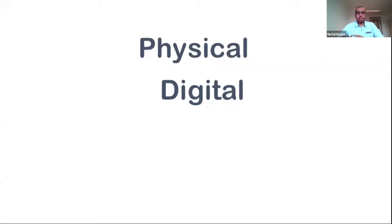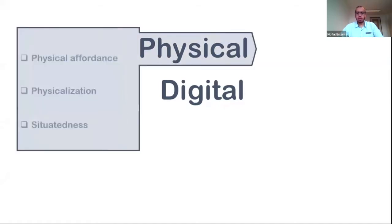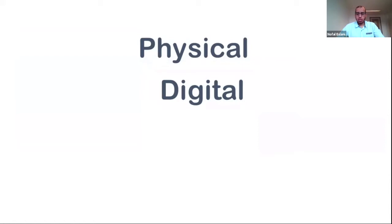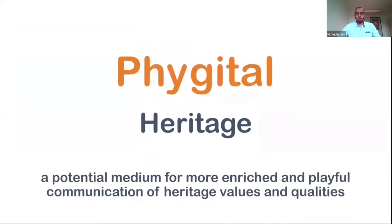We consider both physical and digital, each having different key qualities. Physical — the most common in communication — offers affordance (how the physical form demonstrates the possibility of an action), visualization of information in a physical way, and situatedness (how information relies on physical context to be understood). Digital technology, on the other hand, allows immediate access to different layers of information, personalization, and immersive experience. We therefore propose the integration of digital technology into physical reality, which we call Vegetal — a potential medium for more enriched and playful communication of heritage values.